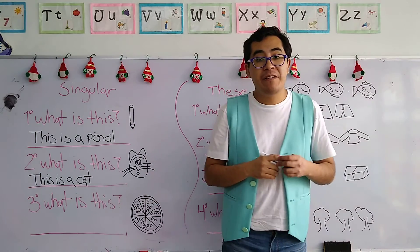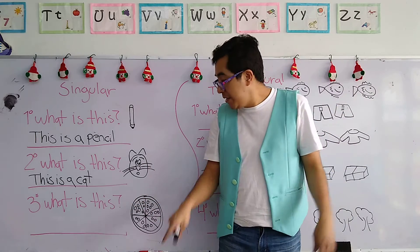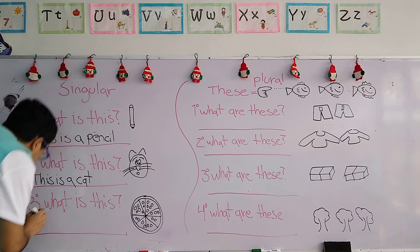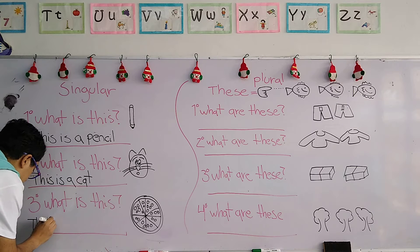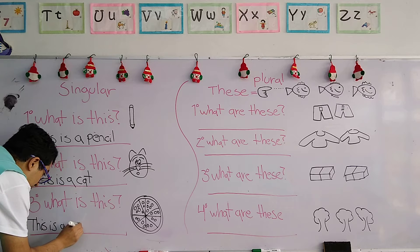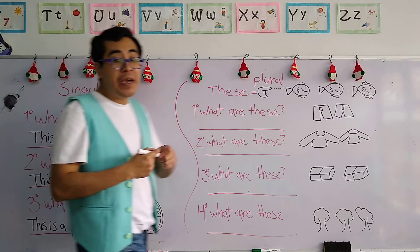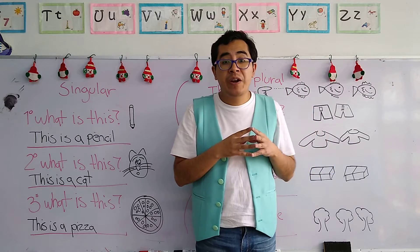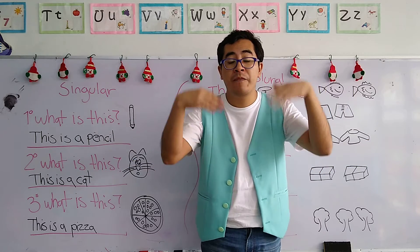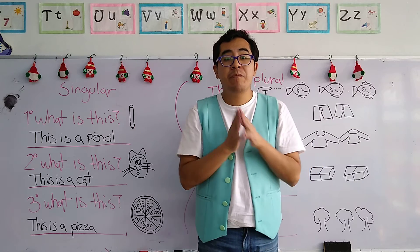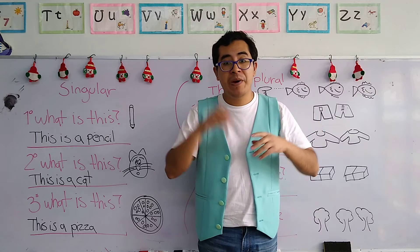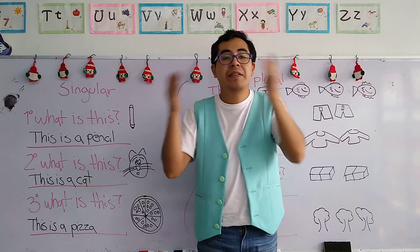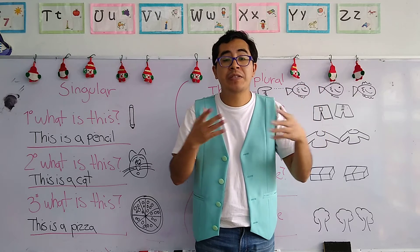Very good. And finally, number three: 'What is this?' This is a pizza — a very delicious pizza. Now, these activities, my children, you can also practice them at home with the help of mother and father. You can grab any object that you want and ask your mother or your father. Ustedes en casita también pueden practicar este tipo de preguntas con mamá o con papá — 'What is this? This is a book. This is a kitchen' — refiriéndose al objeto que ustedes quieran nombrar.